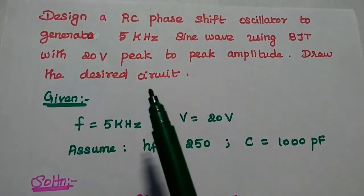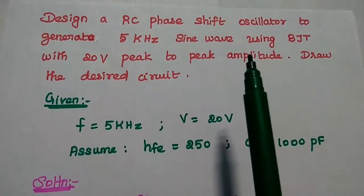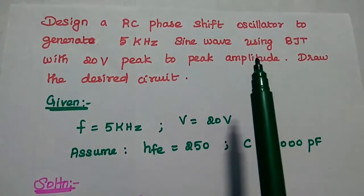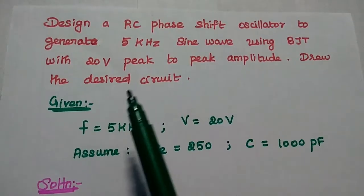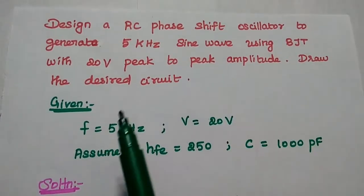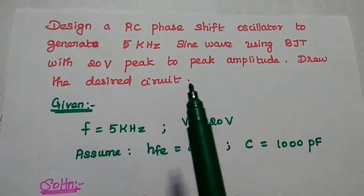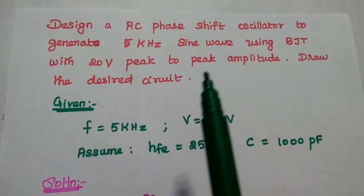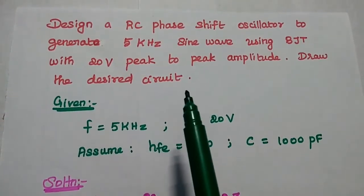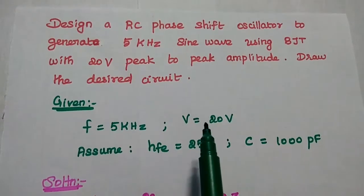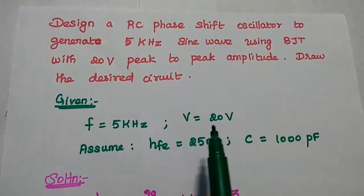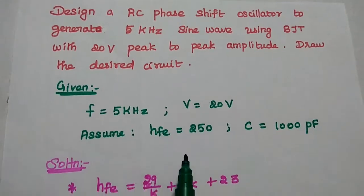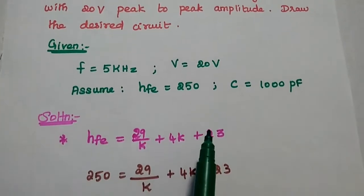We are going to design a RC phase shift oscillator to generate a 5 kilohertz sine wave using a BJT with 20 volt peak-to-peak amplitude. With these two given values — frequency F and peak-to-peak voltage of 20 volts — we are going to design the RC phase shift oscillator.